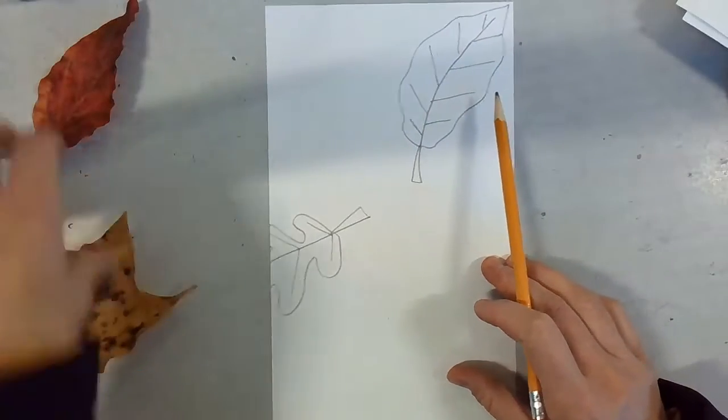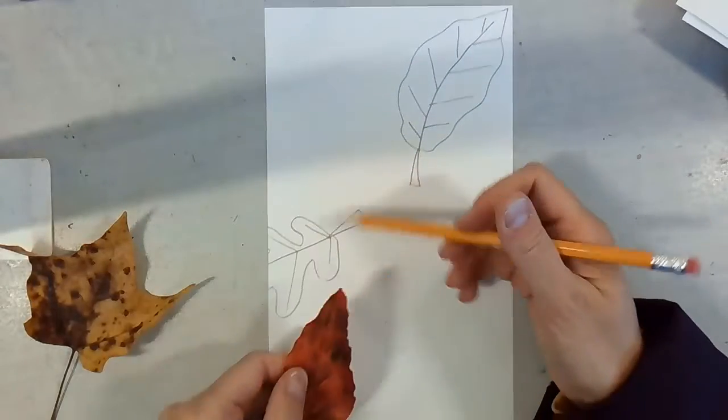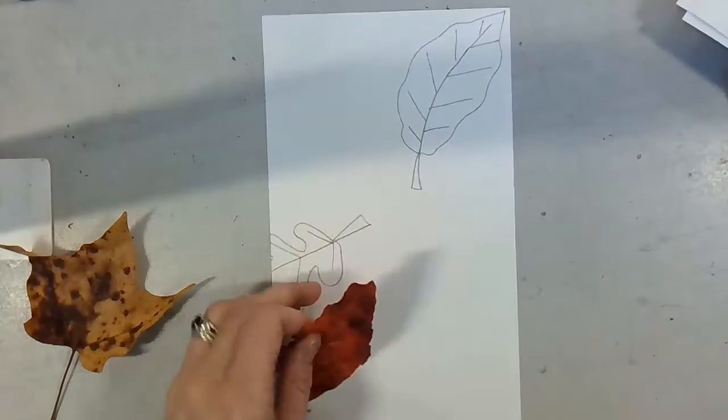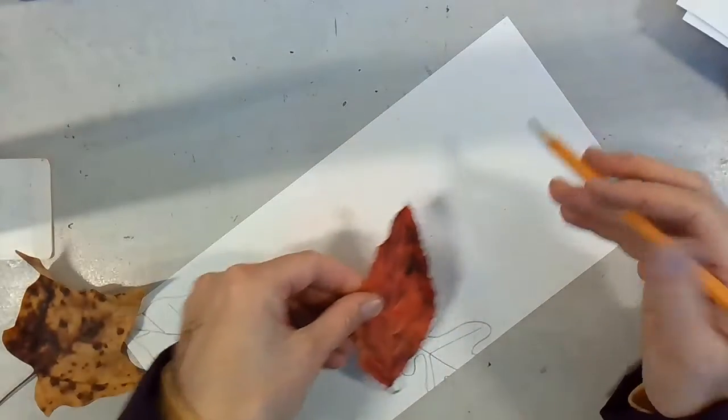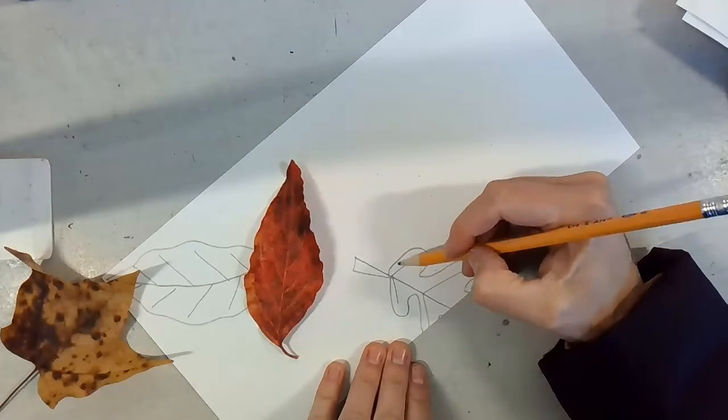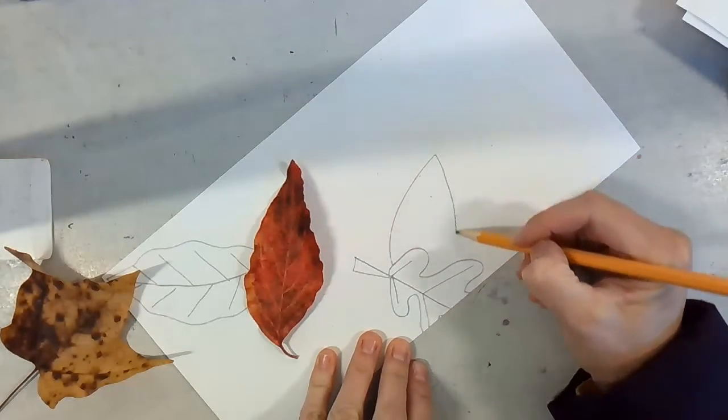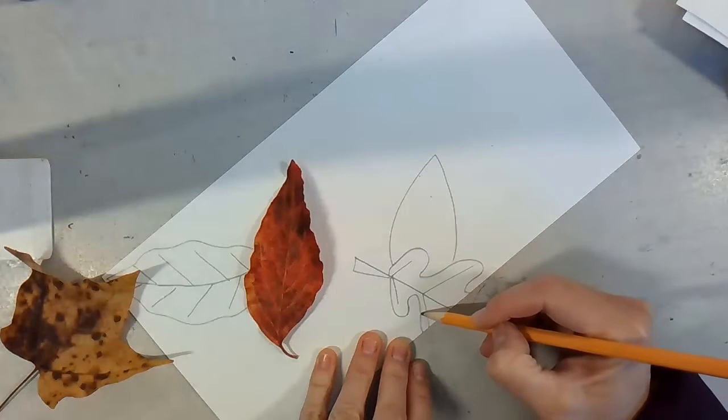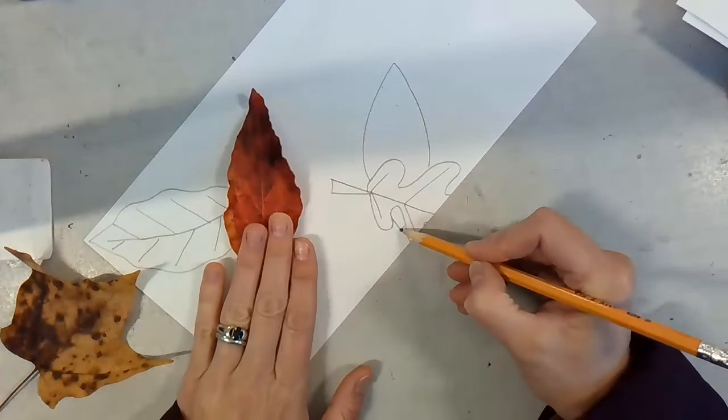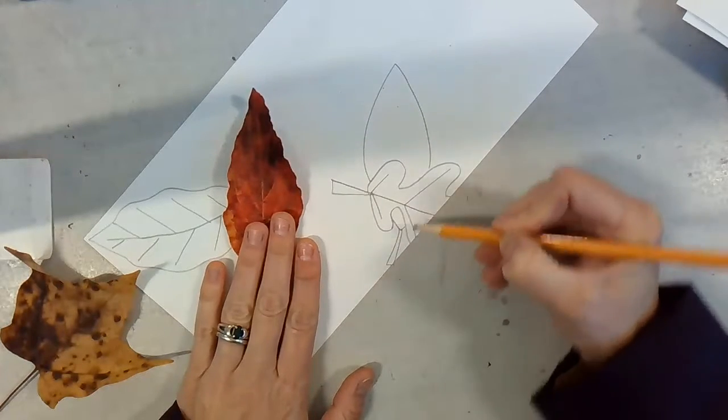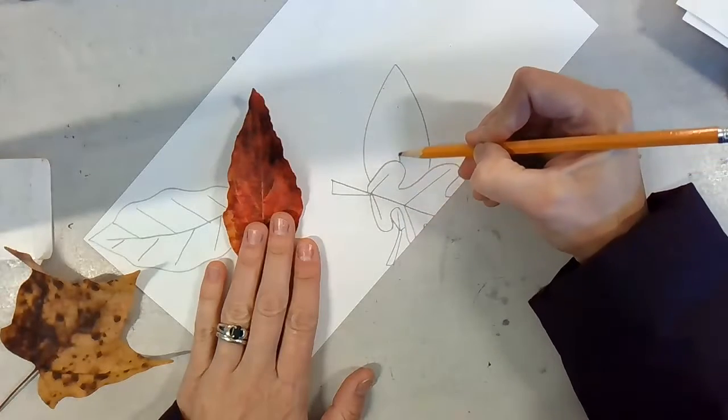And maybe not the maple leaf. Maybe I'll do another more simple oval leaf, and I'm going to put it behind this oak leaf. So maybe this way. So I'm going to start with the oval, and it would continue right here. Add the stem, and then add the veins.